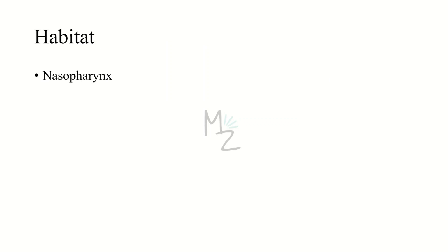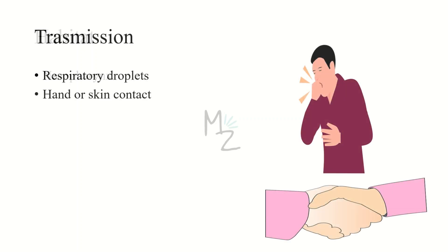Strep pyogenes lives in the nasopharynx of human beings and there are no animal reservoirs. Transmission occurs by respiratory droplets, because the primary disease it causes is pharyngitis, which spreads from person to person via coughing or sneezing. It can also be transmitted by hand or skin contact if there is impetigo or any other skin condition.